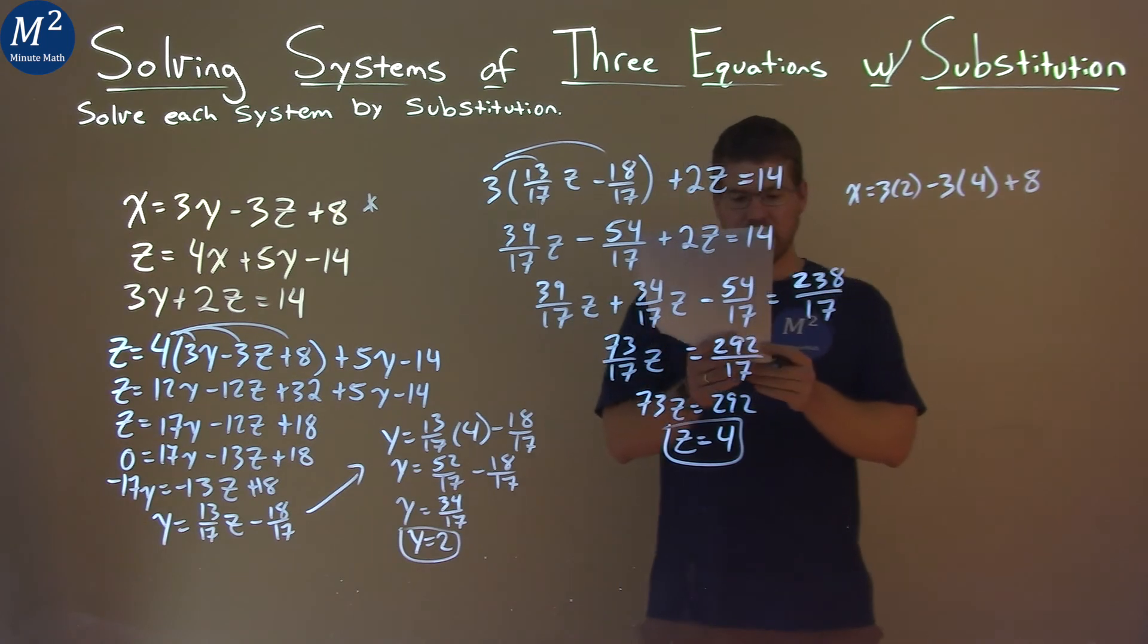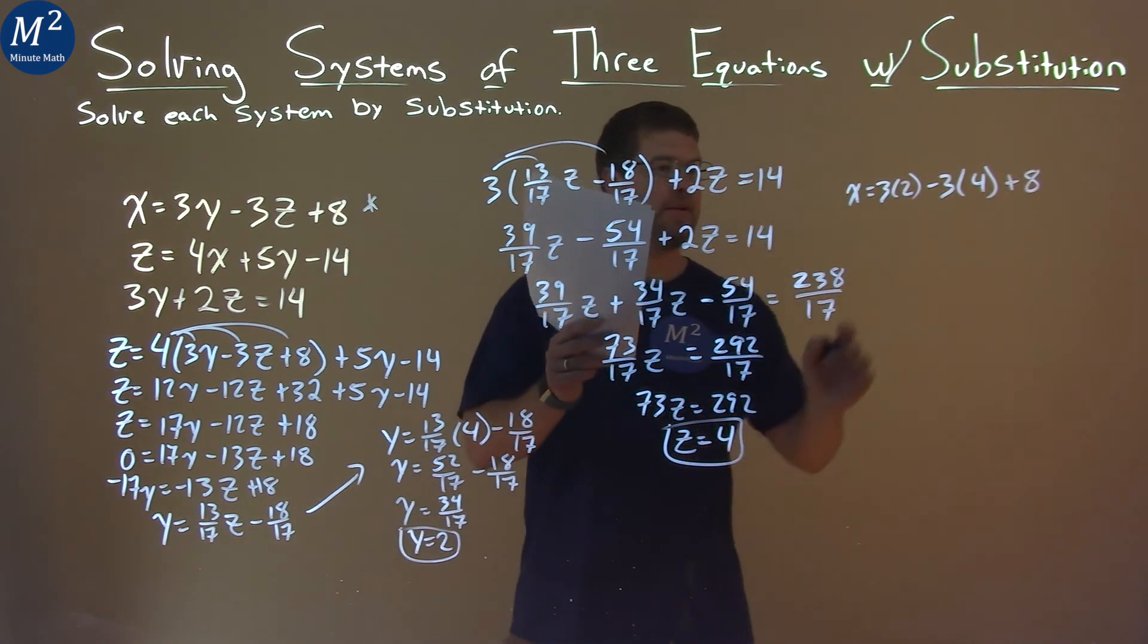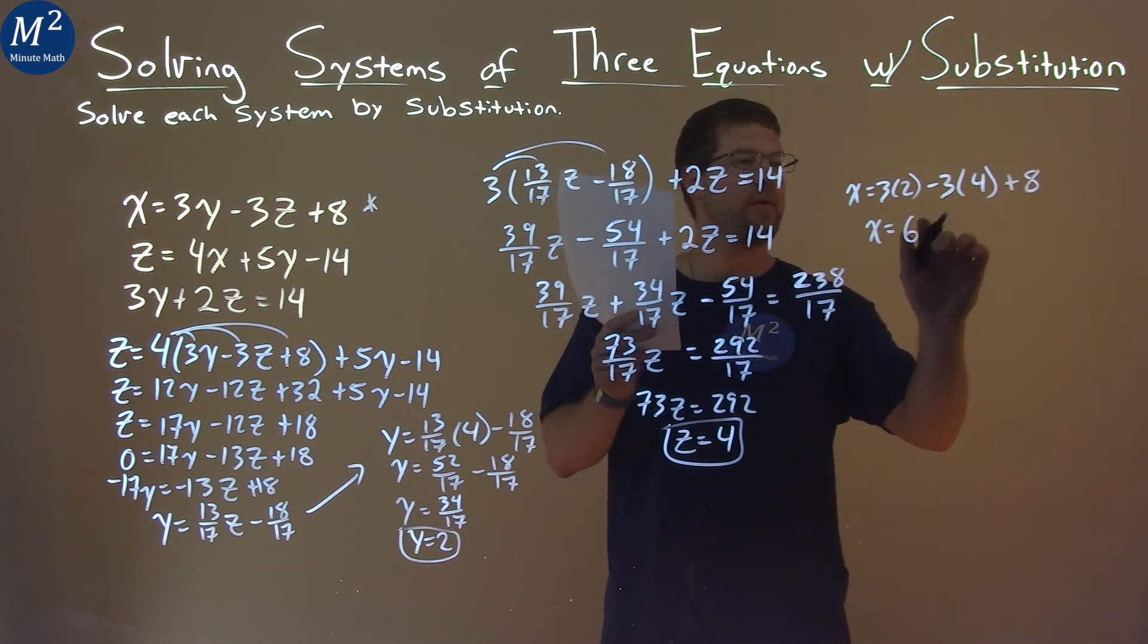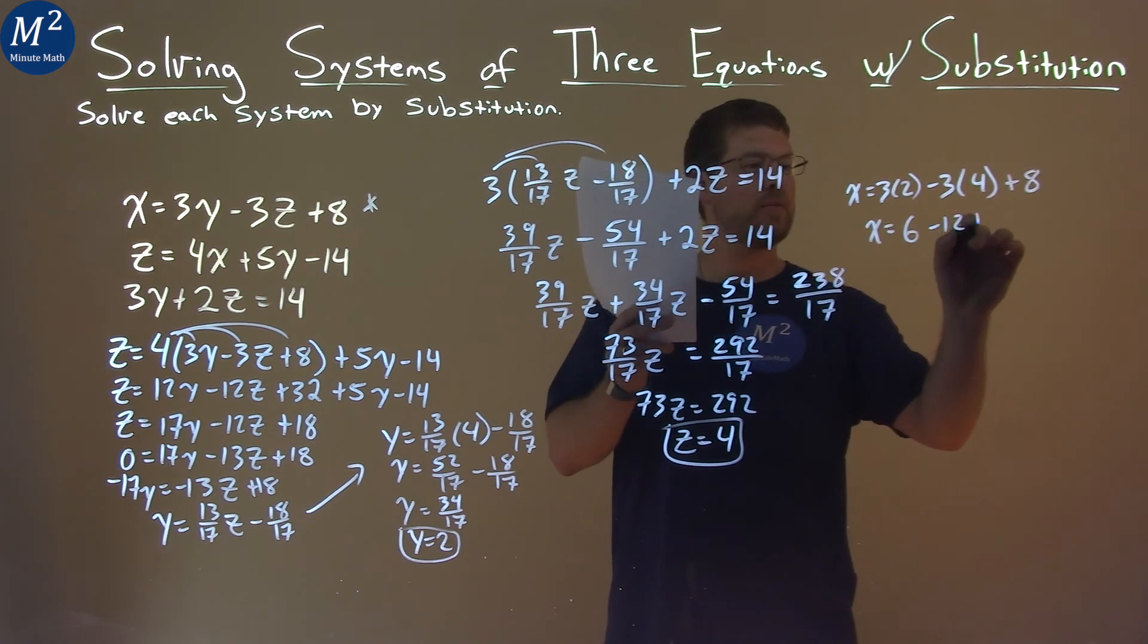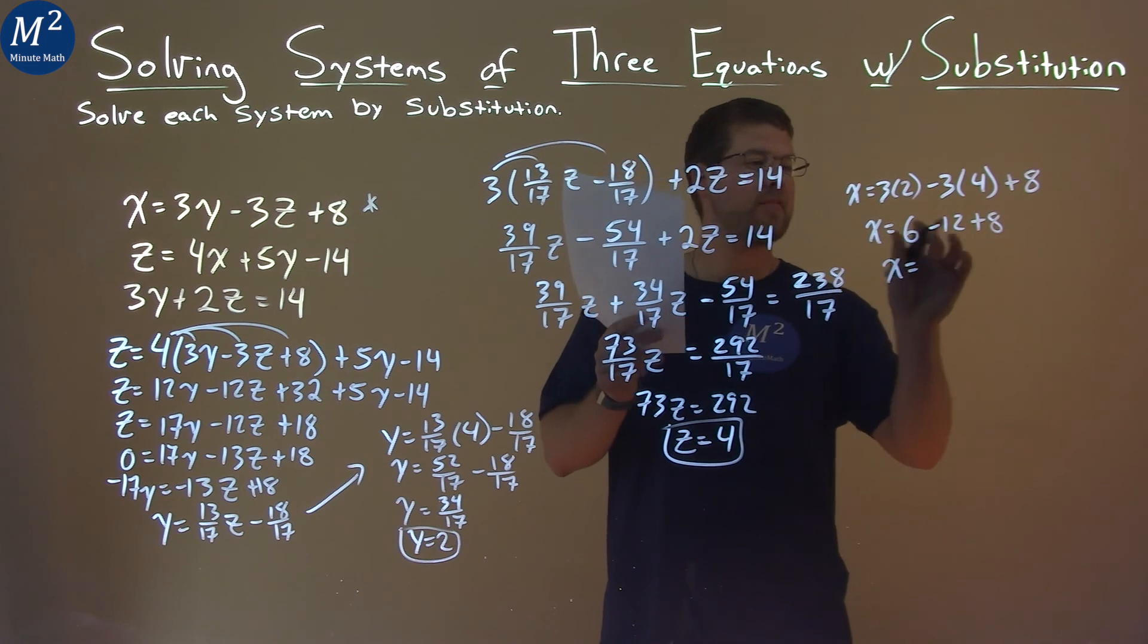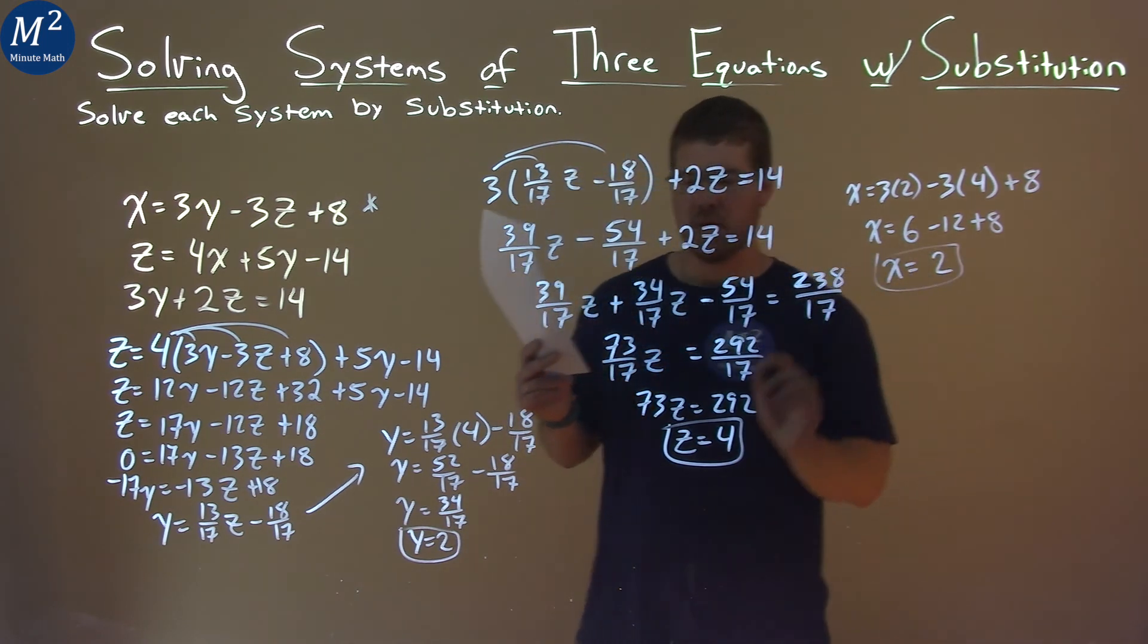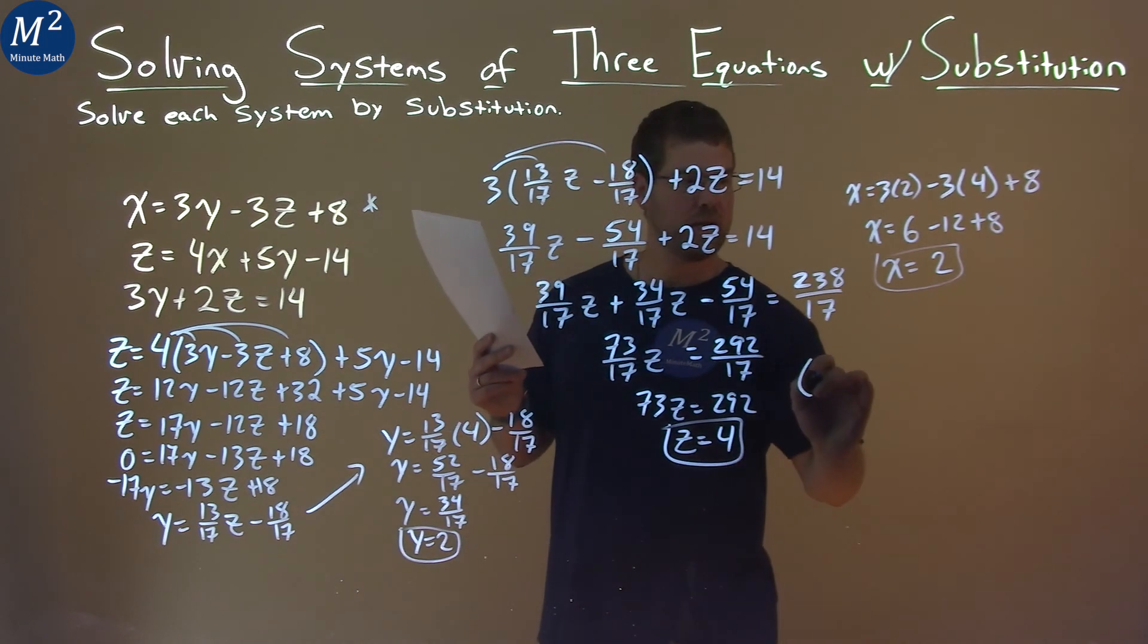Okay? So, let's simplify where we can here. x equals 3 times 2 is 6. 3 times 4 is 12 minus 12 plus 8. Combining all that together, x minus 12 plus 8 is a positive 2. So, we can write this as a coordinate point here, as x is 2, y is 2, and z is 4.